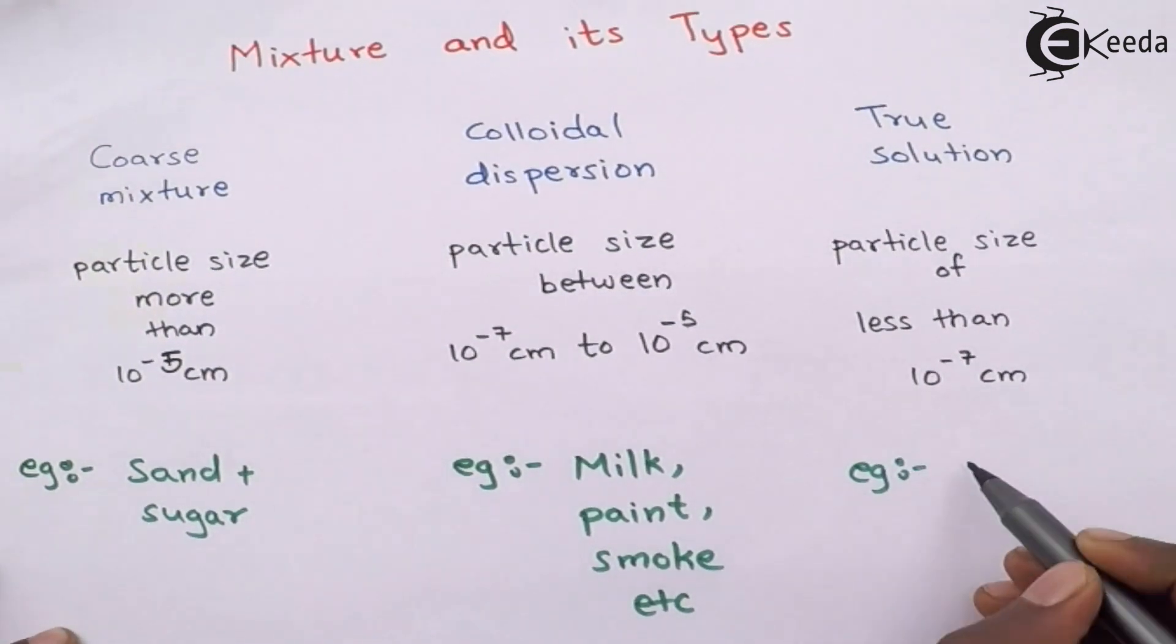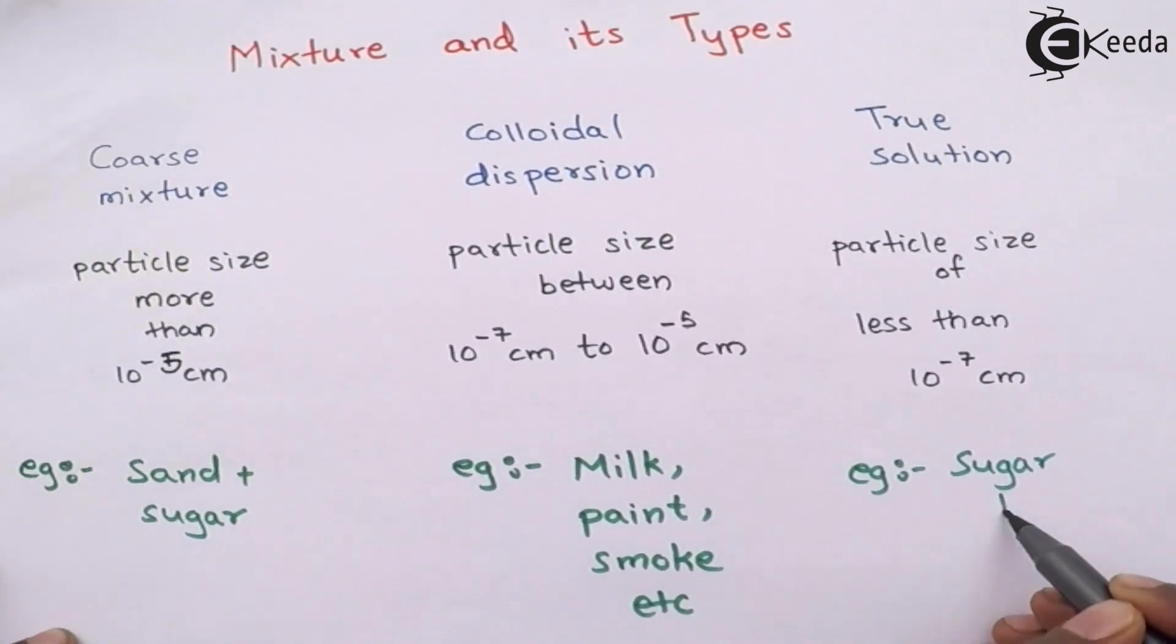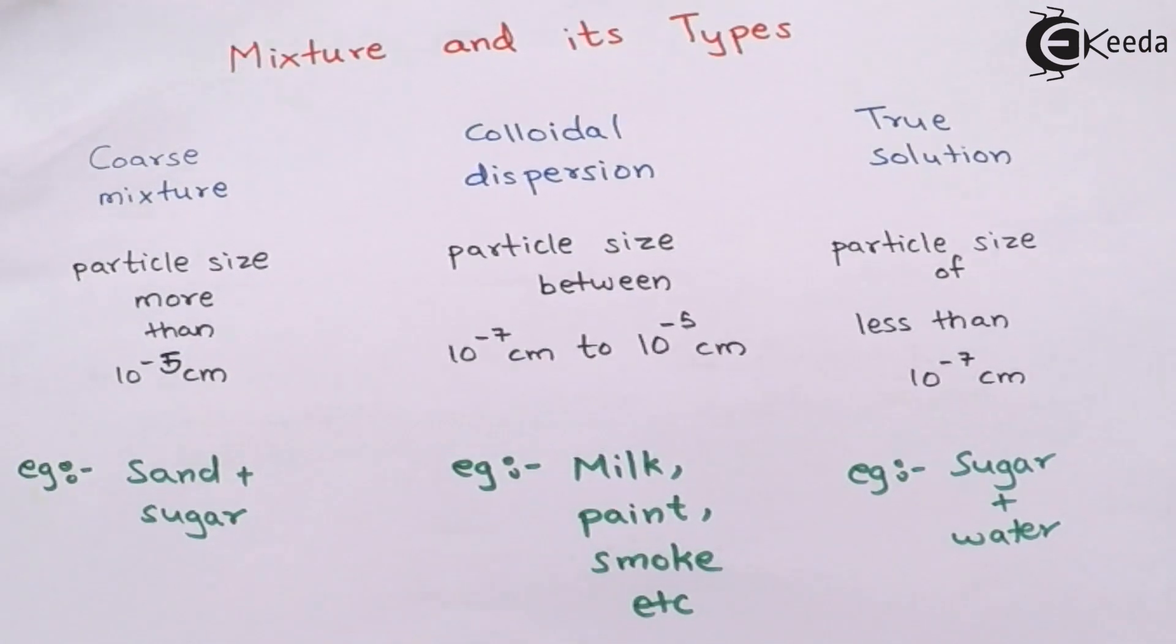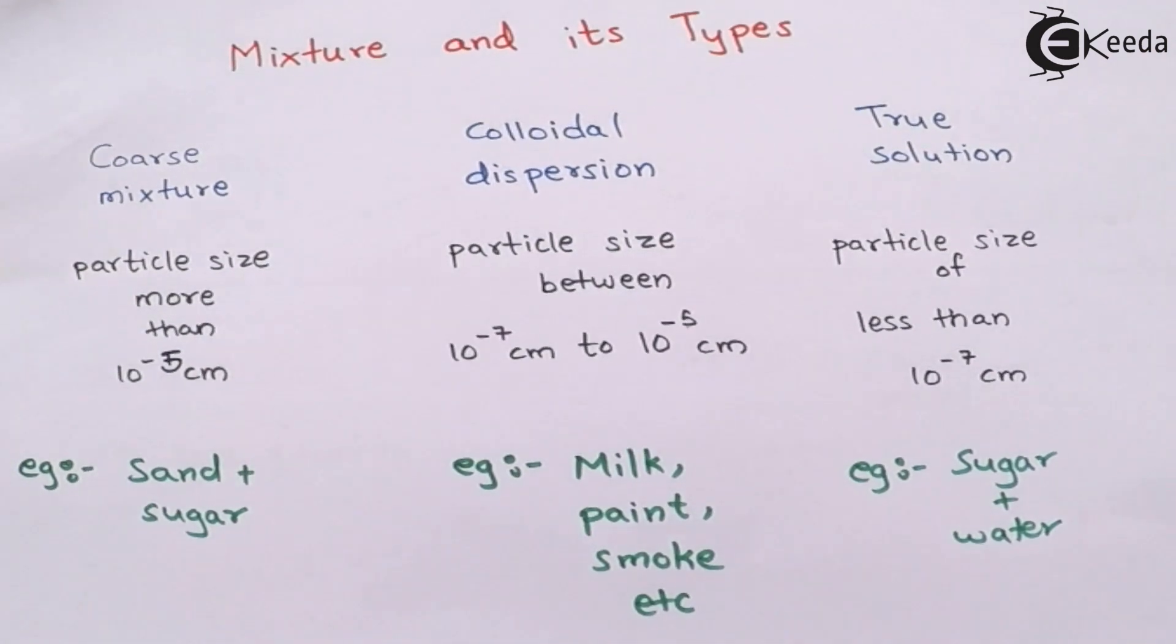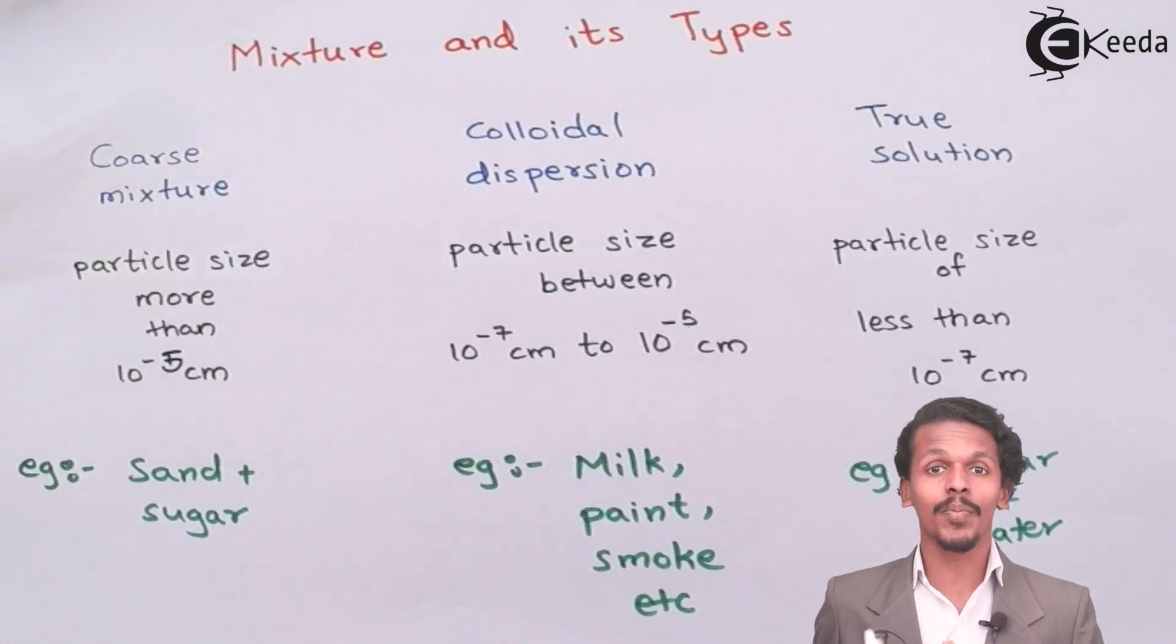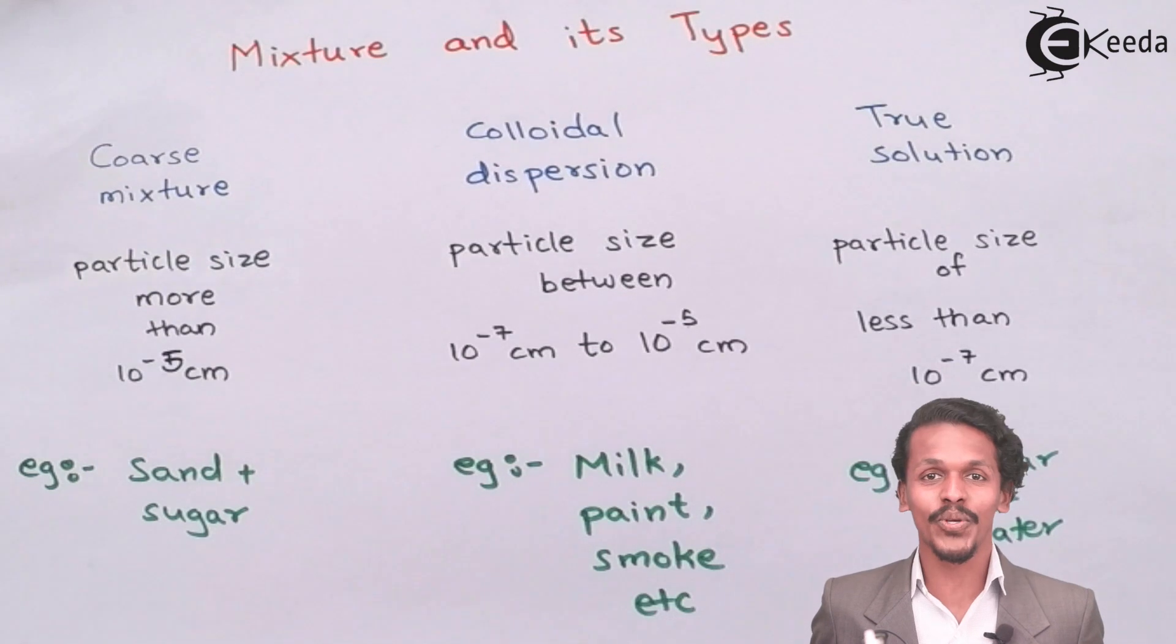If we mix sugar in water, in sufficient amount of water, then we cannot see the particles of sugar. As well as, the particles of water is not also visible to us. This means we cannot see those particles and hence they are known as True Solution or Solutions.